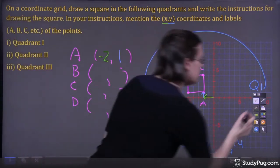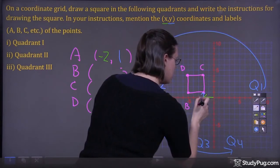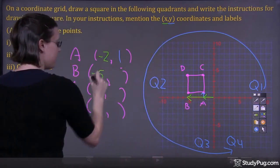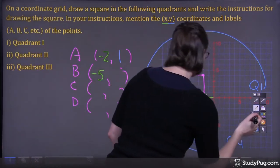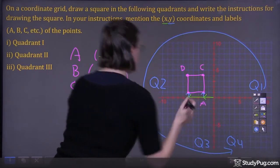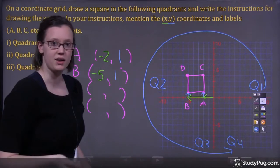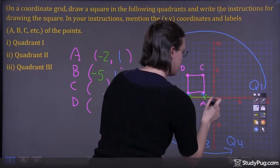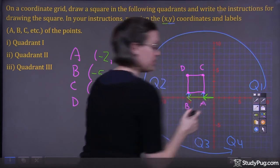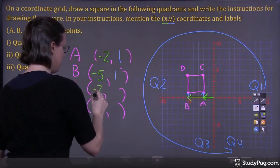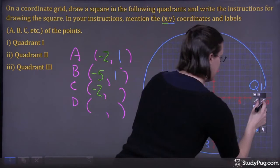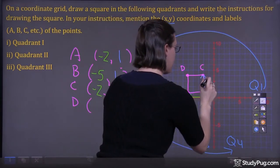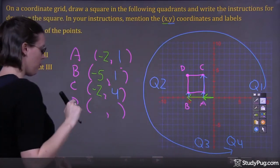Now let's focus on B. We're moving 1, 2, 3, 4, 5 to the left, so we have negative 5. And we're moving 1 up, so we have positive 1 — giving us (-5, 1). Now let's focus on point C. We're moving 1, 2 to the left, so we have negative 2. And we're moving 1, 2, 3, 4 up, so we have positive 4 — giving us (-2, 4).